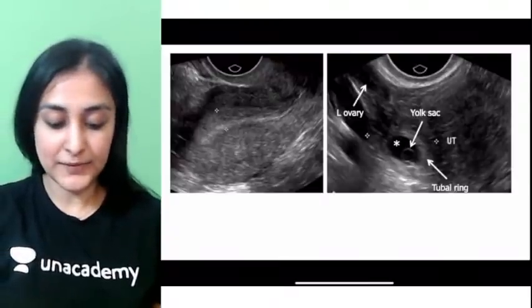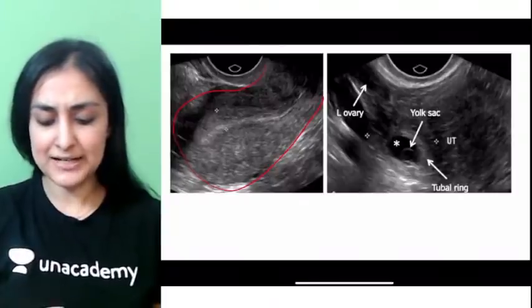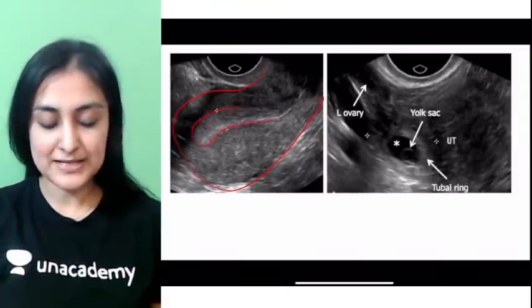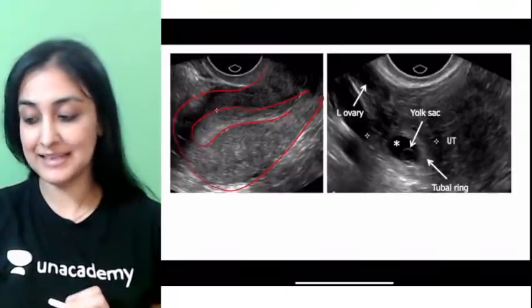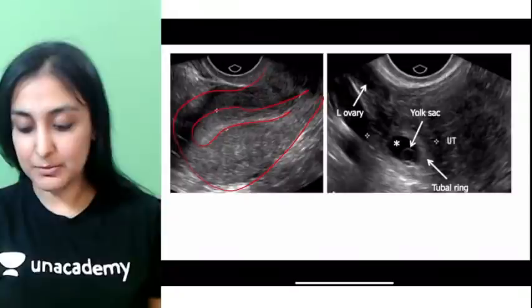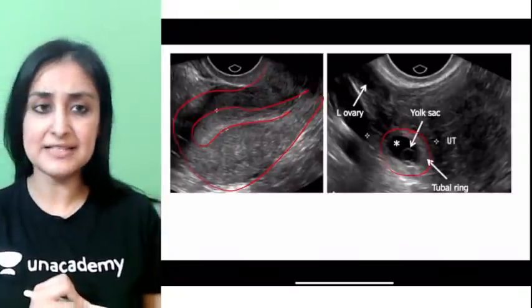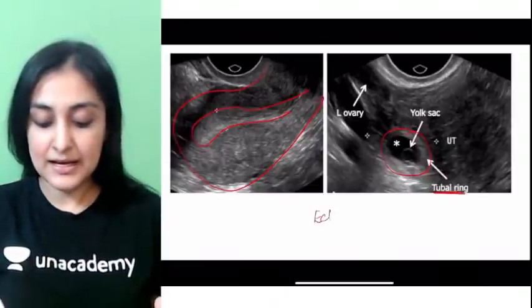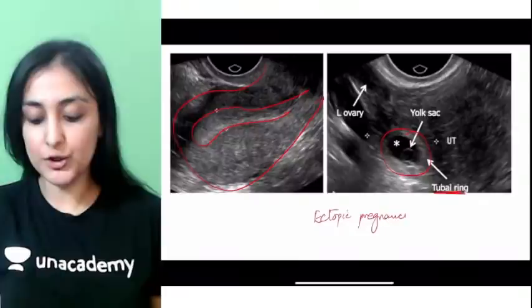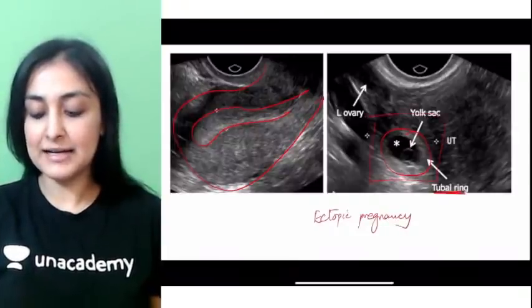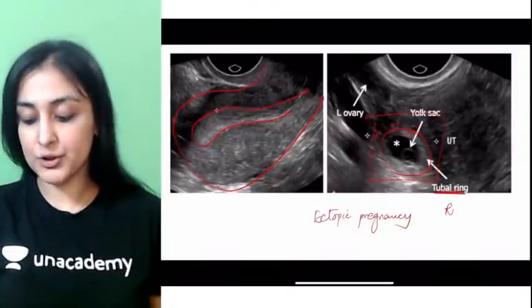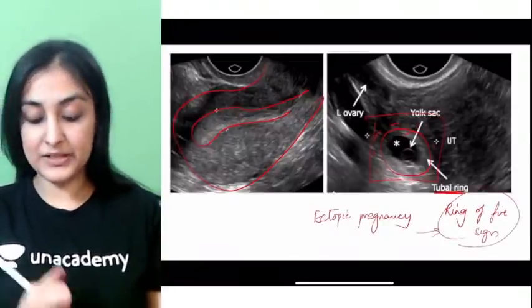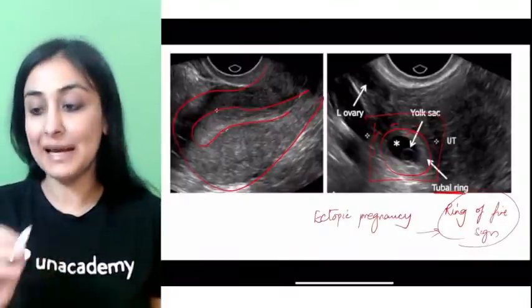This is a transvaginal sonogram of someone with a raised beta-hCG and positive urine pregnancy test. The endometrium has no gestational sac inside, but somewhere outside — near the adnexa — a pregnancy is developing. This is ectopic pregnancy. When you apply Doppler, you see peripheral vascularity around it, referred to as the ring of fire sign on Doppler ultrasound.